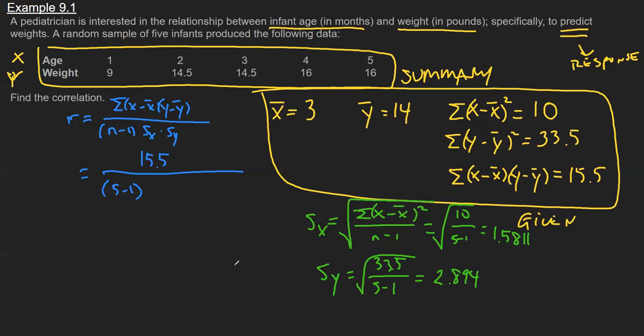And these are the values I'll plug in to my correlation equation. I'll leave them the same color to highlight. This is our 1.5811 we just did, and then similarly 2.894.